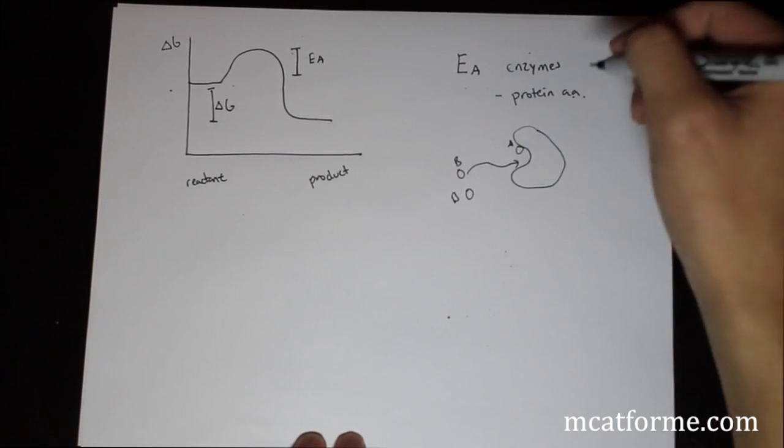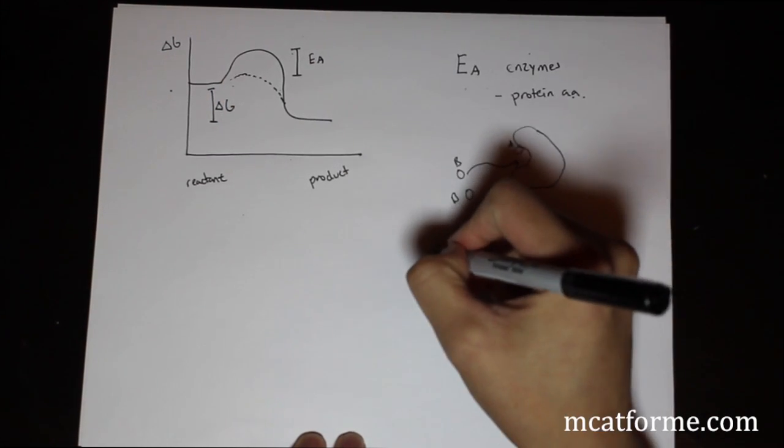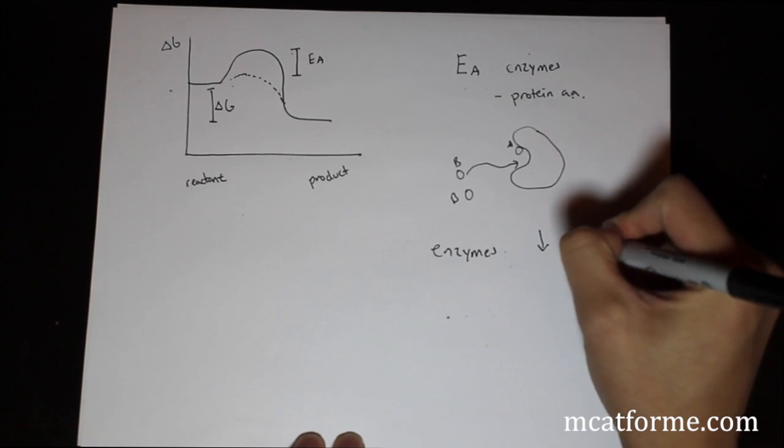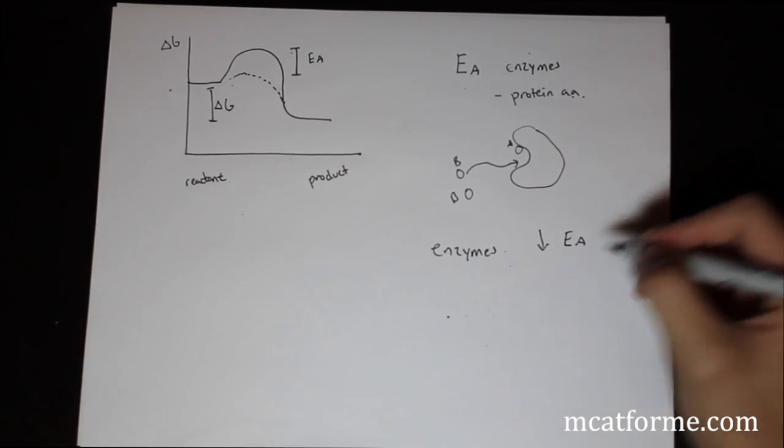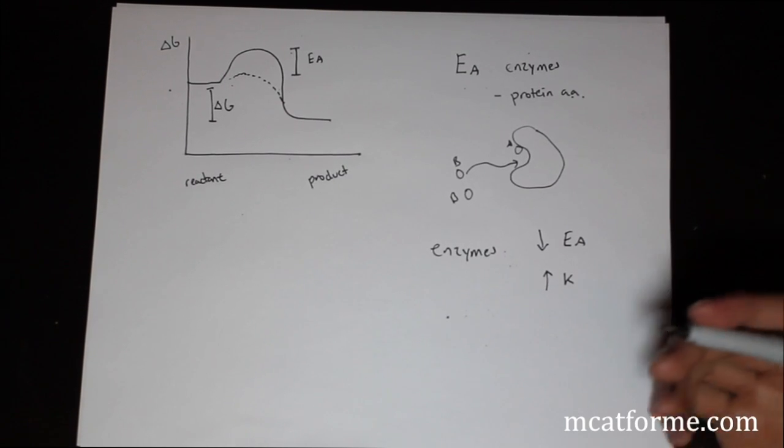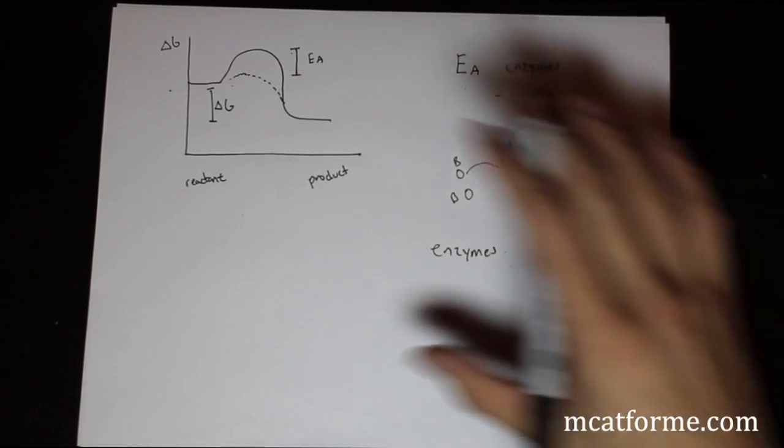But pretty much enzymes will affect activation energy. And how they do that? They will decrease activation energy. So enzymes decrease activation energy. So if we decrease the activation energy, that's going to increase the rate. So that's all we really need to know. We'll go into more detail later. But for now, just know this basic graph and delta G versus activation energy.